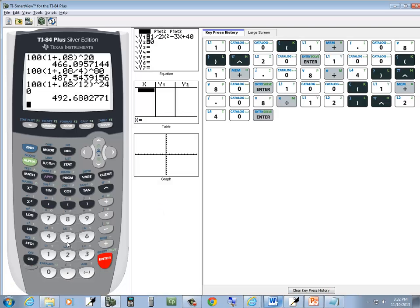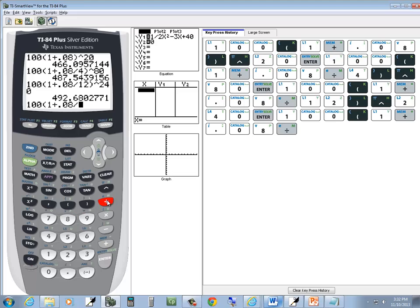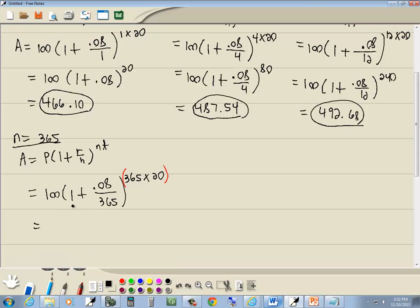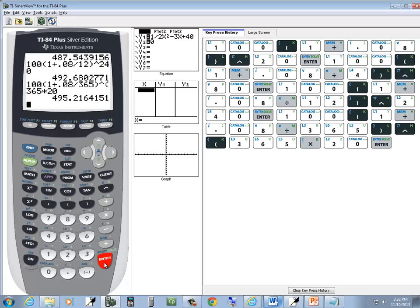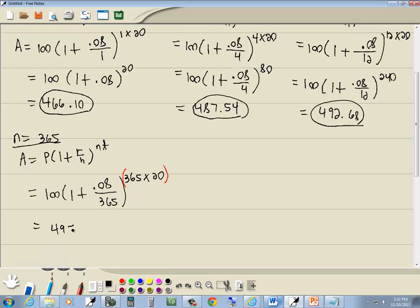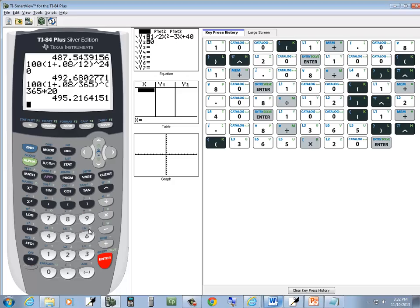So, I'm gonna do 100, beginning parentheses, 1 plus 0.08, divided by 365, closing parentheses, carat, then beginning parentheses for the exponent, and 365 times 20. You can put a closing parentheses on at the very end if you want, or just press enter. And that'll give us 495.22.